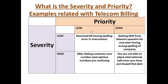Now we'll focus on different combinations: low priority and low severity, low severity and high priority, high severity and low priority, and high severity and high priority. Low priority and low severity — for example, you have received a bill from your telecom operator which has spelling errors in the instructions at the end of the bill. That is not important and does not affect functionality, so it is a low severity and low priority defect.